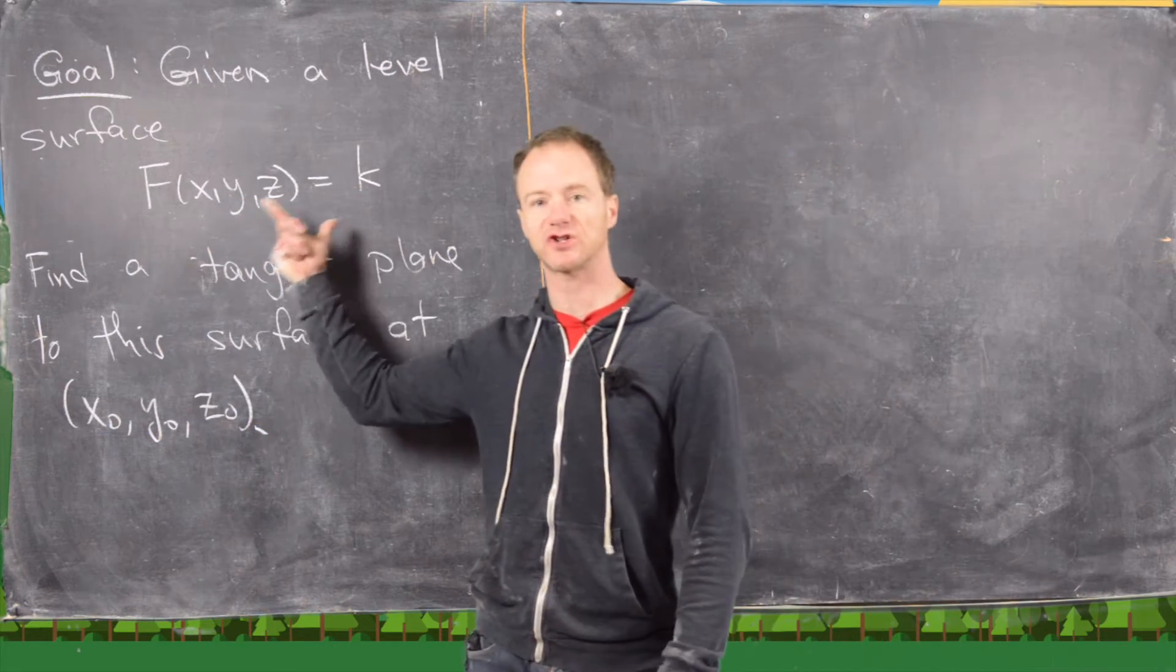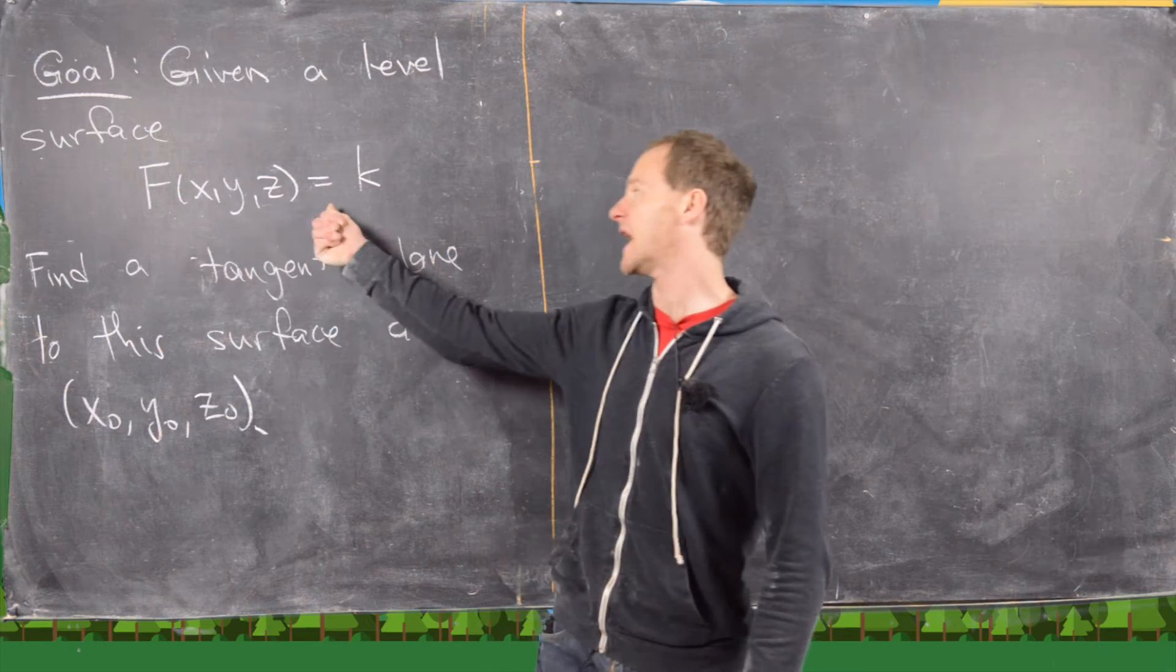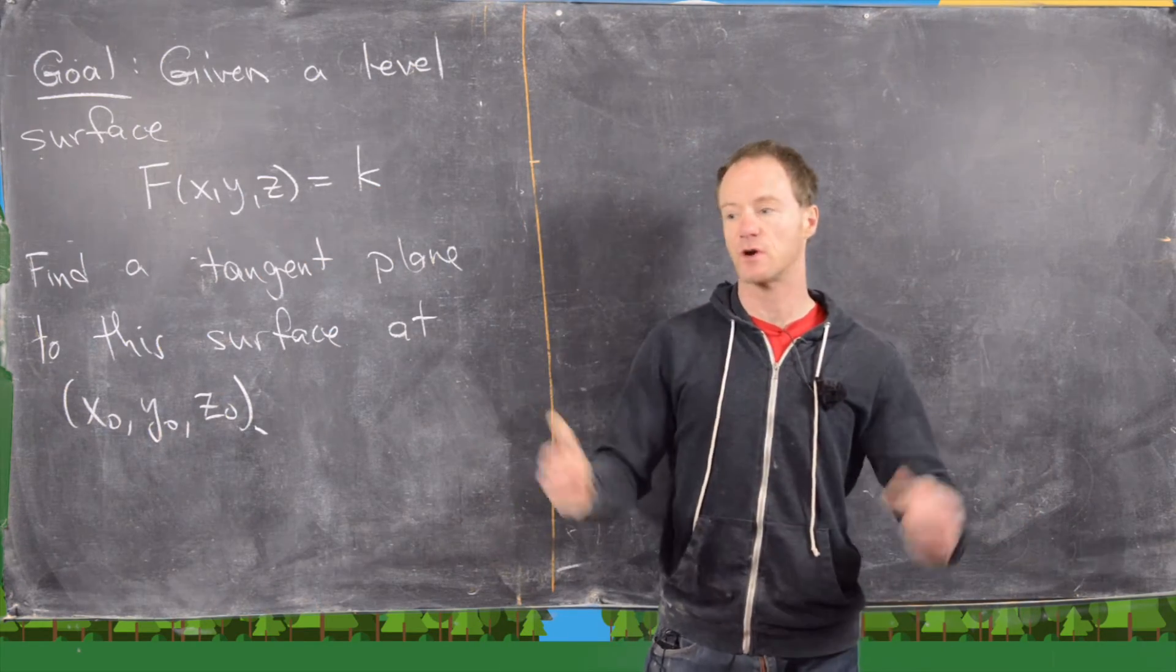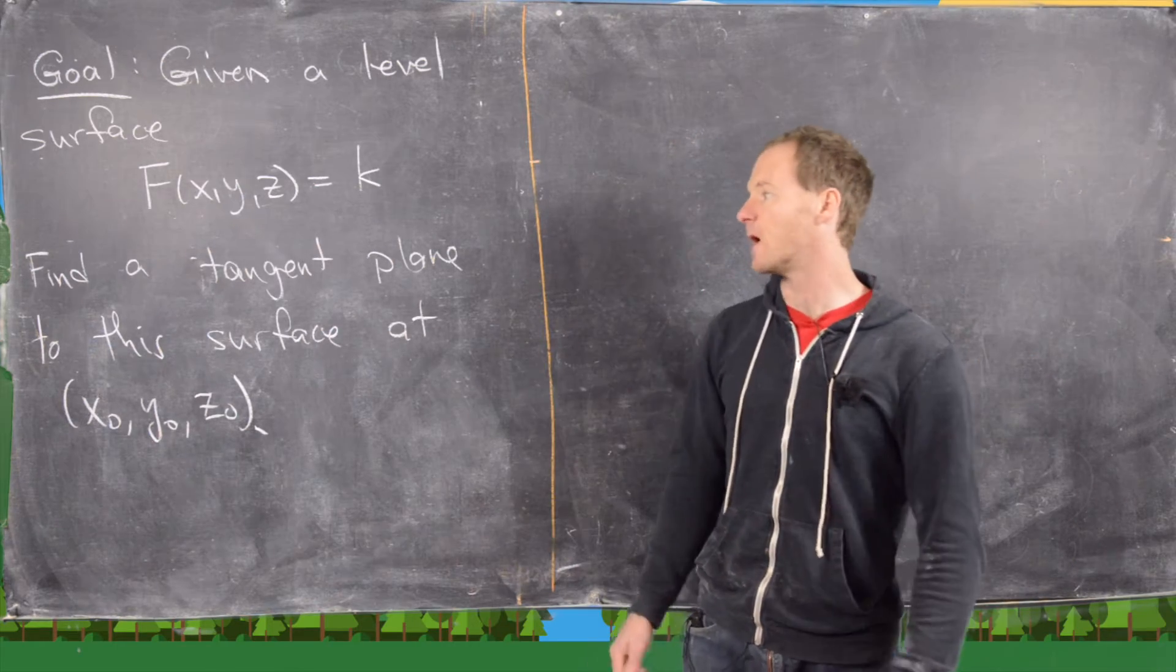So in other words, f is a function of three variables, and we set it equal to a constant. That's going to give us some sort of three-dimensional object.